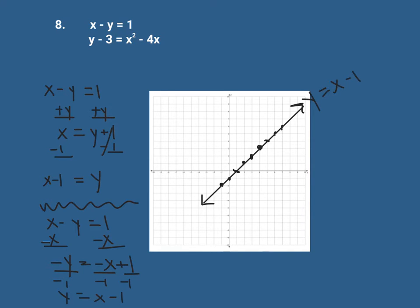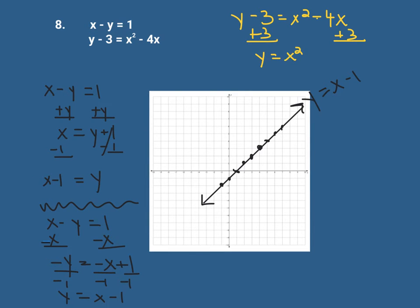Now for our second equation, y minus 3 equals x squared minus 4x. To get y by itself, add 3 to both sides, leaving y equals x squared minus 4x plus 3. Our first equation — with x and y both to the first power — graphs as a line. Here, with y to the first power and x squared, it's going to graph as a parabola. We call this a quadratic.